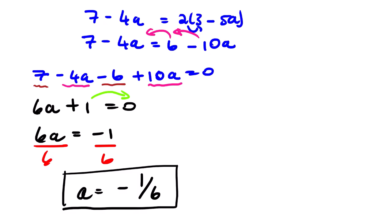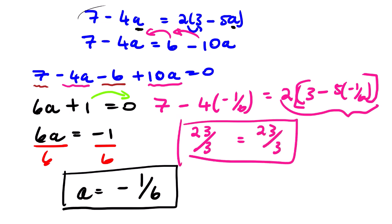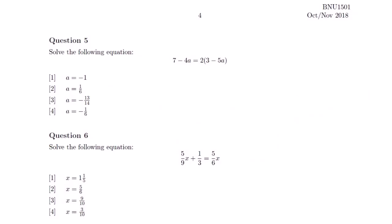This is the solution to the equation. We can prove if our answer is correct by substituting where we see a. The left-hand side must equal the right-hand side. We have 7 minus 4 times negative 1 over 6. Simplifying the left-hand side gives 2 and 3 over 3, and simplifying the right-hand side also gives 2 and 3 over 3. Since left equals right, our solution is correct. The correct option is option 4.